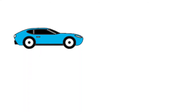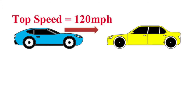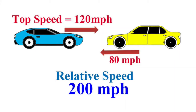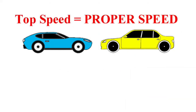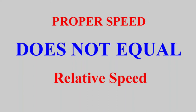To illustrate what we mean by proper speed, imagine the blue car traveling at its top speed of 120 miles an hour — this is its maximum speed. Now there's another car coming in the opposite direction going at 80 miles an hour. So quite simply, the relative speed to each other is 200 miles an hour. But that's greater than its top speed. How can it be greater than its maximum speed? This is because the top speed is its proper speed and does not equal its relative speed.